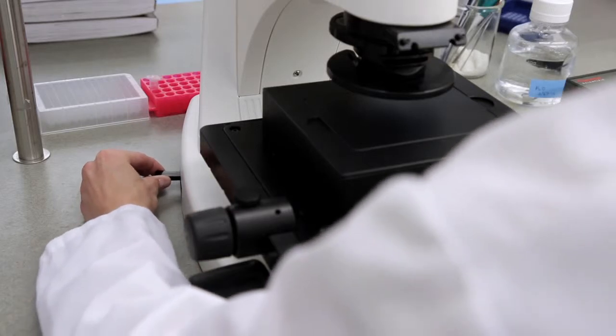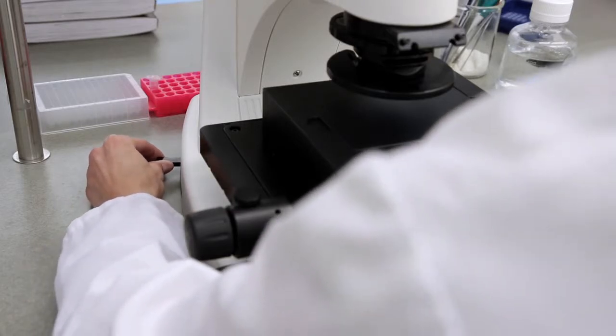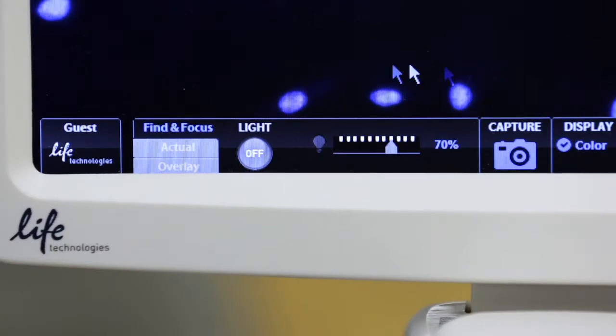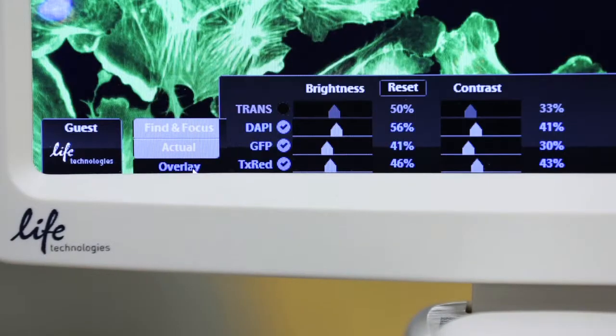Color channels are changed by sliding the lever on the side of the instrument. Once the channels have been collected, you can overlay the images by selecting the overlay tab.